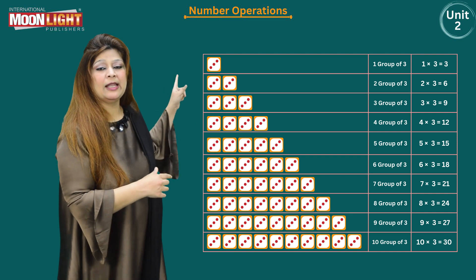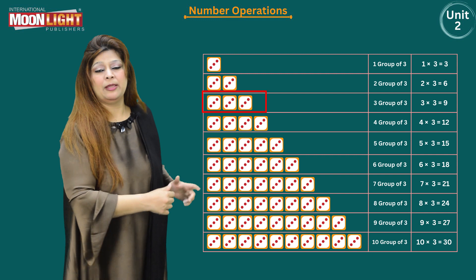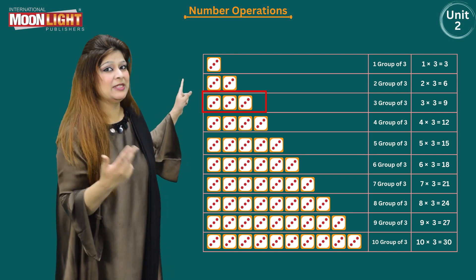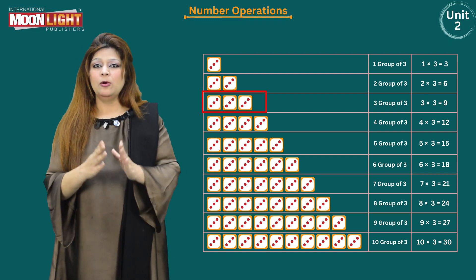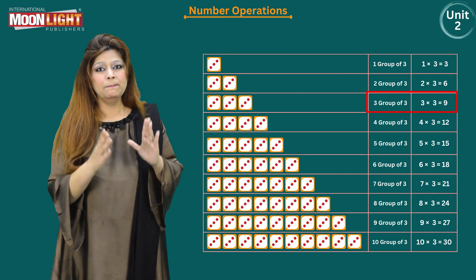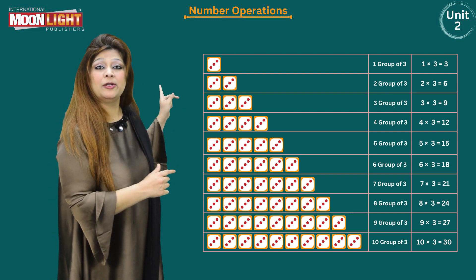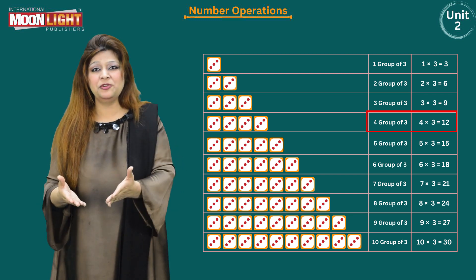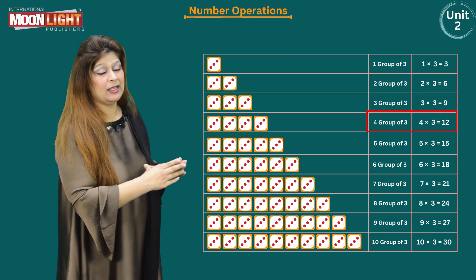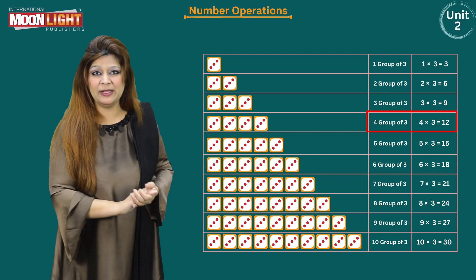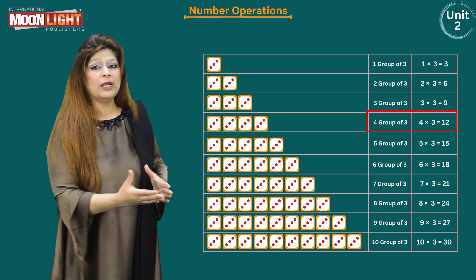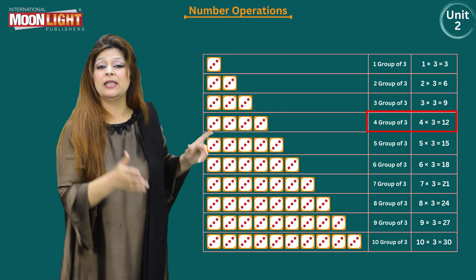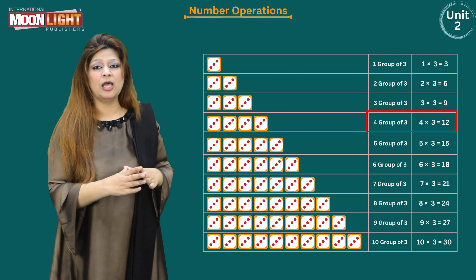Now three groups of three: three times three, or three plus three plus three equals nine. So three multiplied by three is equals to nine. Next, four groups of three: the number three is repeating four times, so three plus three plus three plus three — that is four times three — and four multiplied by three is equals to twelve.